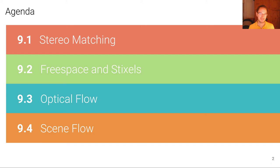For those who have already attended the computer vision lecture, some content on stereo matching and optical flow will be familiar and serves as a recap. Most of the content on free space and scene flow should be new to everyone.